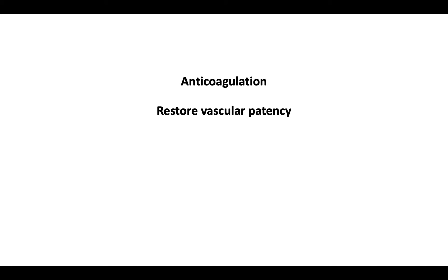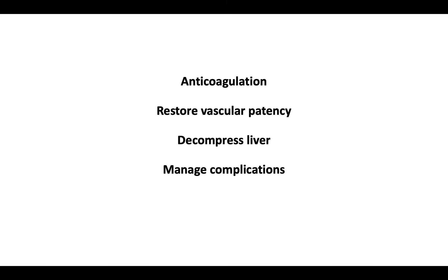Finally, let's discuss management. The primary treatment strategy is to prevent clot propagation through anticoagulation. Secondly, the goal is to restore the patency of thrombosed veins through thrombolysis, angioplasty, or stenting. Additionally, treatment involves decompressing the liver using a transjugular intrahepatic portosystemic shunt, or TIPS. Also, prevent or manage complications, including treatment of portal hypertension and, if needed, liver transplantation. Finally, if identified, treat the underlying condition.